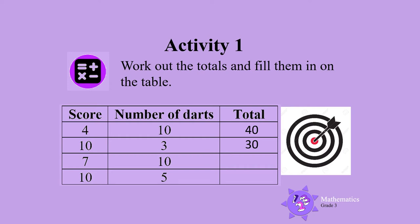He then scored 7 10 times. The total is 7 times 10, which is 70. And lastly, he scored 10 5 times. The total is 5 times 10, which is 50.